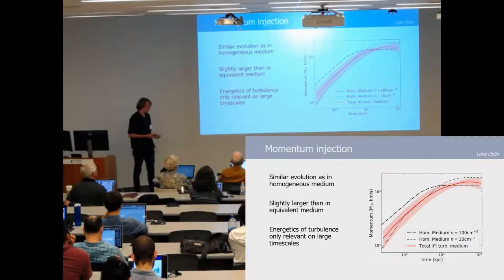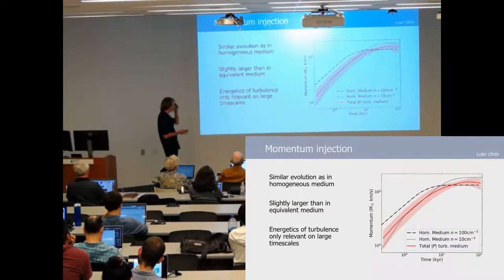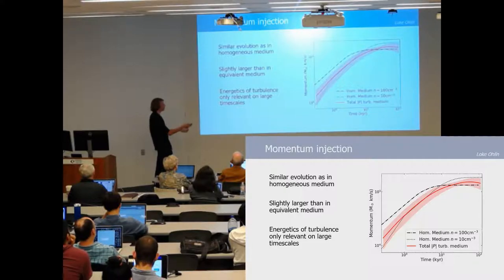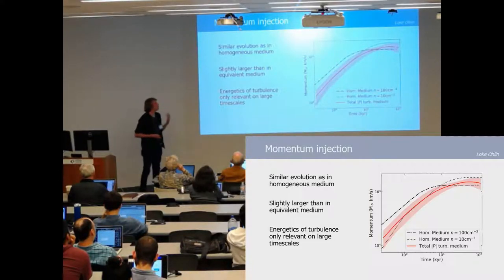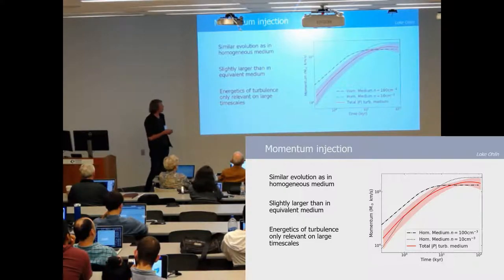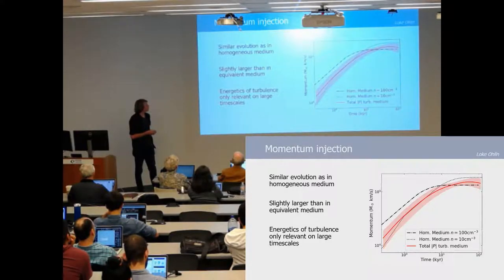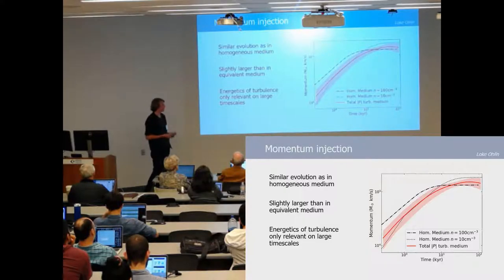Now, did this affect the momentum ejection? Well, not really. So here what I'm plotting is the momentum of the supernovae in the turbulent environment in red with the scatter. In comparison I'm also plotting the expected evolution in a homogeneous environment. Here in dash-dotted we have for 100 hydrogen per cubic centimeter, the average density of our box, and in dotted we have for lower density of 10 hydrogen per cubic centimeter.